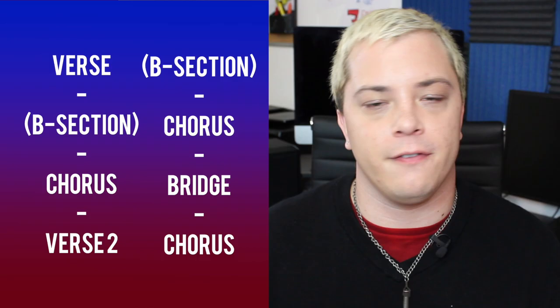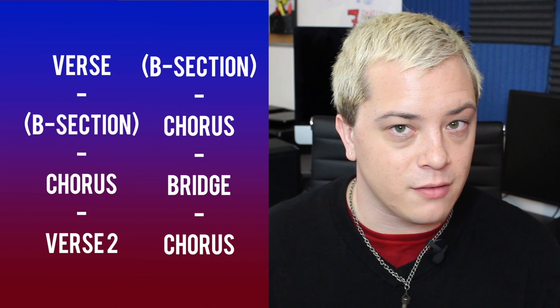Verse-chorus form is a basic structure consisting of verse, sometimes a B section, chorus, verse two, chorus, bridge, chorus. In modern radio, that format tends to lend itself to shorter songs, though that's not always the case — there are always exceptions depending on your song. For a good example of this format, check out 'Part of Me' by Katy Perry.